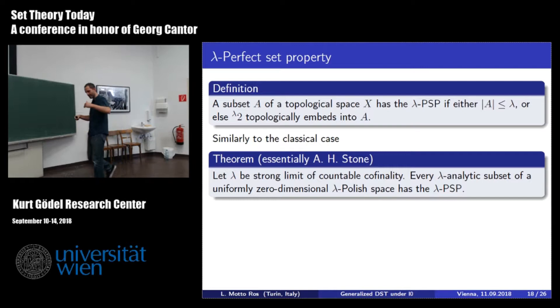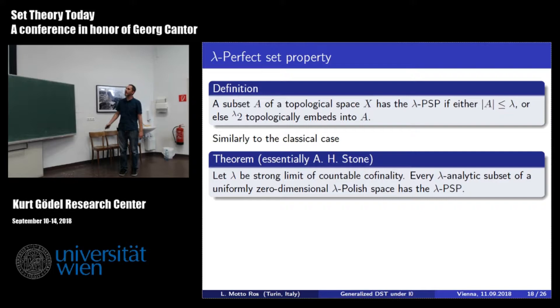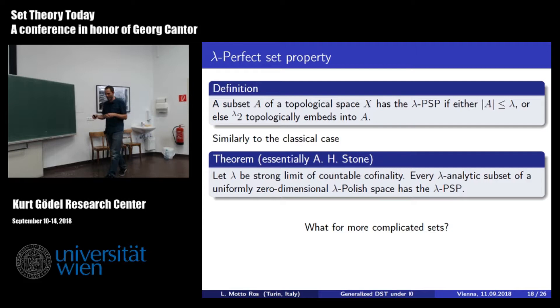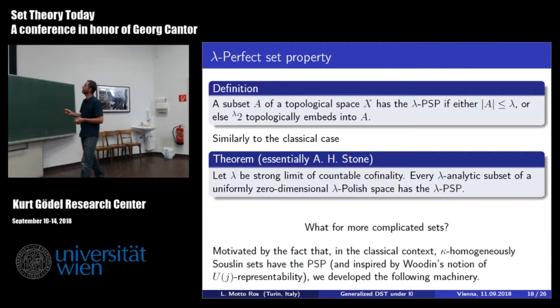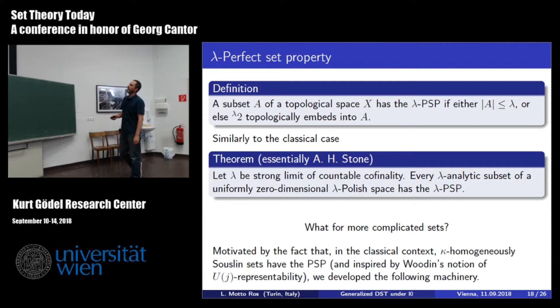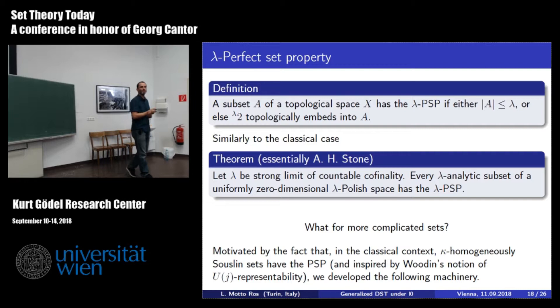Since 2^lambda is Stone's space, Stone's proof immediately gives that all lambda-analytic sets have this perfect set property. Can we go further? In the classical case, until analytic sets you can prove this with a classical argument; if you want the perfect set property for more complicated sets, you need determinacy or something like that. And if you look at papers from the 80s and 90s when people were trying to prove ID is consistent, they were working with kappa-homogeneous Suslin sets and showing that kappa-homogeneous Suslin implies many consequences of determinacy. This notion is what inspired Woodin in defining UJ-representability.